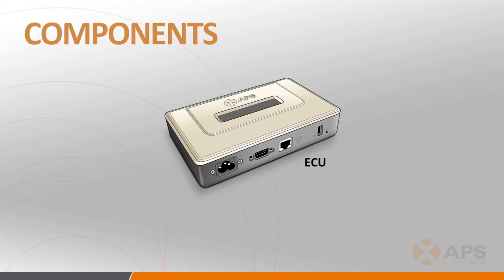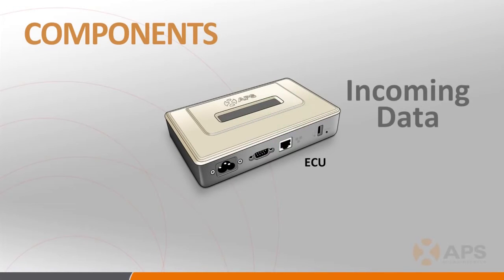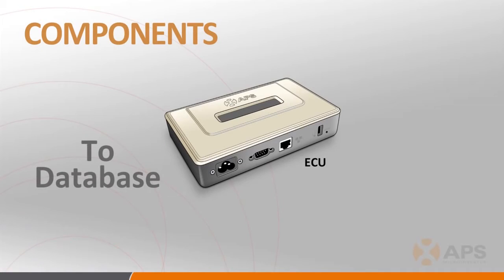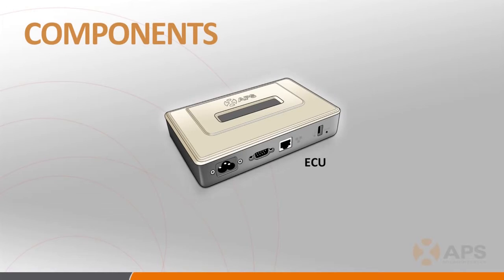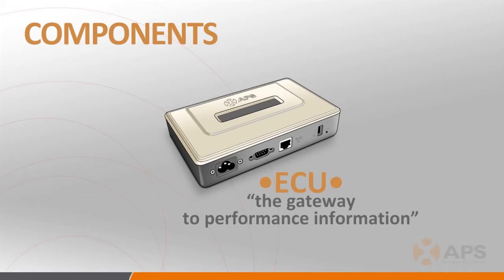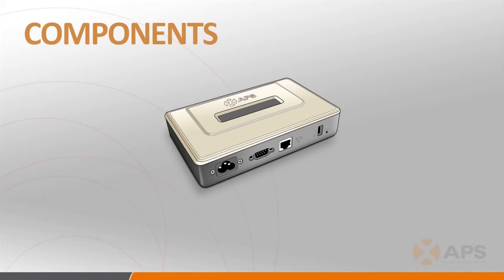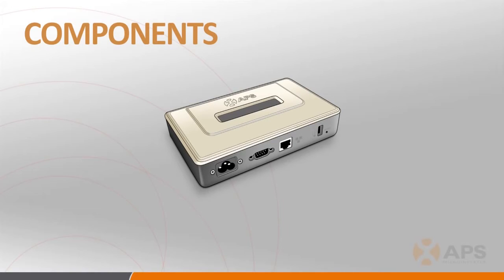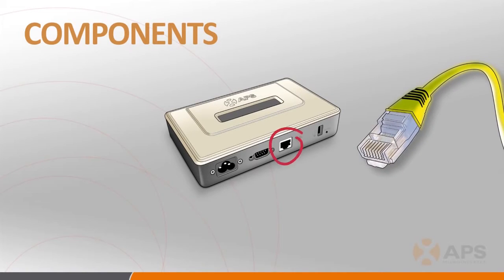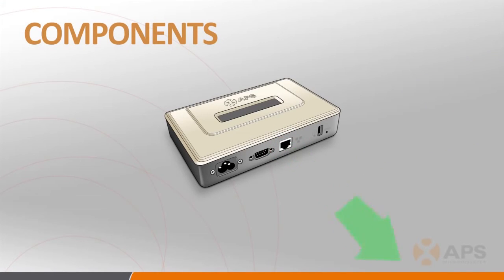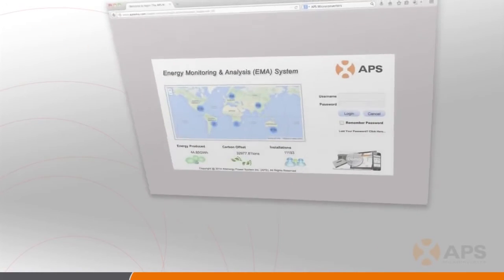The ECU collects and stores the performance data from each of the microinverters and sends it to the APS database so that the array can be monitored via the internet. The ECU, while optional, is an essential component of the remote monitoring system that should be thought of as the gateway to the performance information that can be retrieved from each inverter and its assigned PV modules. The ECU uses the PLC protocol to communicate with each of the inverters. Please note that the ECU is not a wireless device and requires an electronic bridge or direct CAT5 connection to communicate to a network router.